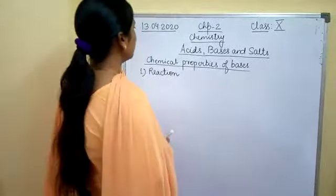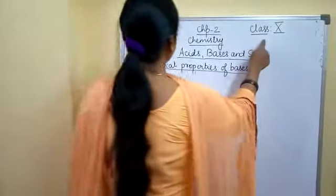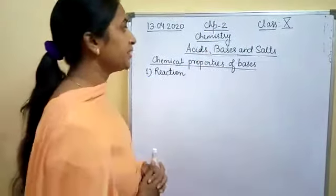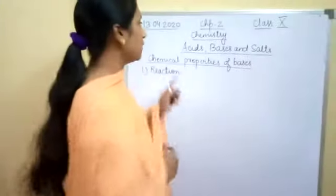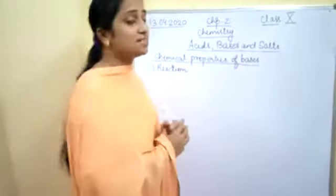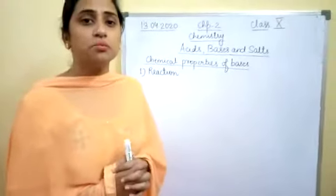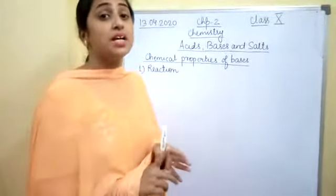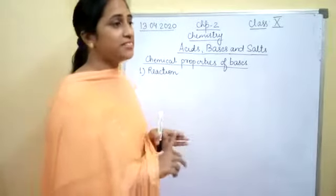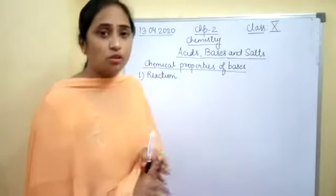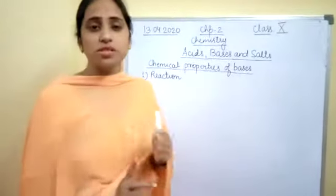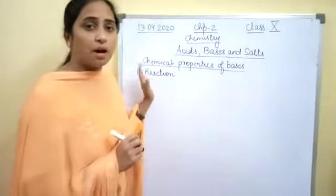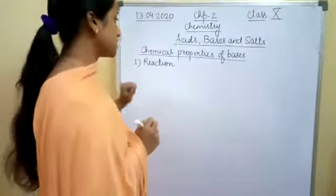Good afternoon, dear students. I am teaching Class 10, Chapter 2 — Chemistry: Acids, Bases and Salts. In the last lecture we studied about acids and their chemical properties — four reactions: reaction with metal, reaction with metal hydrogen carbonate, reaction with metallic oxide, and the test for CO₂. In this lecture we will be studying about the chemical properties of bases.